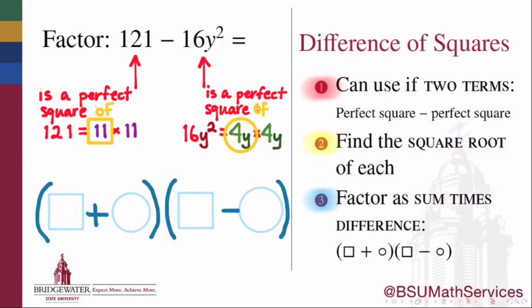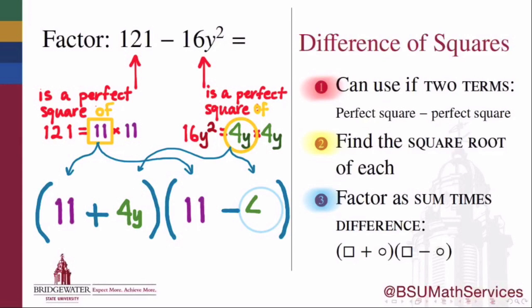So the first term in those sums and differences will be the first of our square roots, 11. So we'll place 11 in our first term. And the second term is the second of our square roots, which is 4y. So we'll place 4y in the other terms.